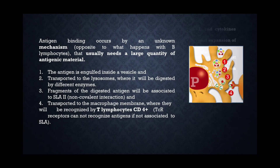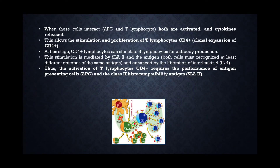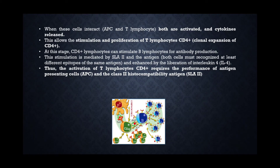When these cells interact, both APCs and T lymphocytes are activated and cytokines are released. This allows the stimulation and proliferation of T lymphocytes with CD4+ markers. At this stage, CD4+ lymphocytes can stimulate B lymphocytes for antibody production. This stimulation is mediated by SLA-2 and the antigen, and enhanced by the liberation of interleukins. Thus, the activation of T lymphocytes CD4+ requires the performance of antigen presenting cells and the SLA-2s.